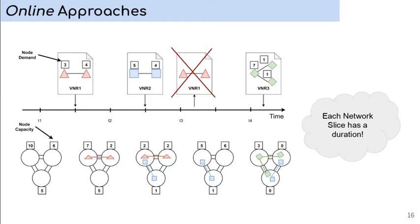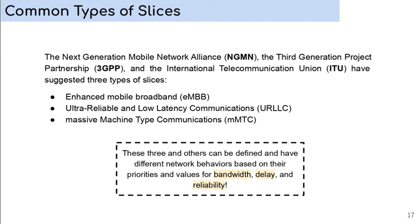The Next Generation Mobile Network Alliance, the Third Generation Project Partnership, and the International Telecommunication Union have suggested three types of slices. First, enhanced mobile broadband. Second, ultra-reliable and low-latency communication. And the last one, massive machine-type communication. It is important to note that these three and others can be defined and have different network behaviors based on their priorities and values for bandwidth, delay, and reliability.